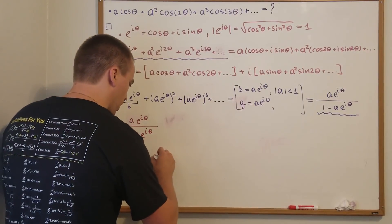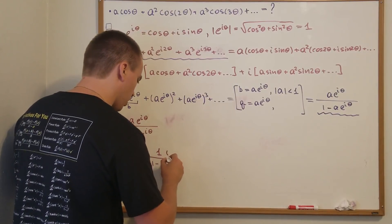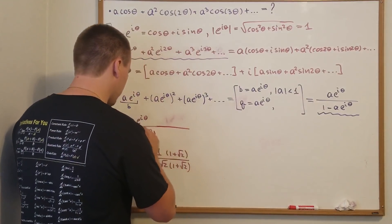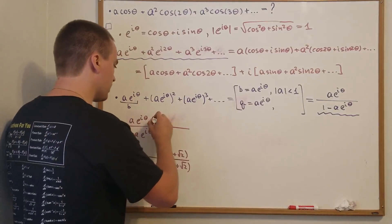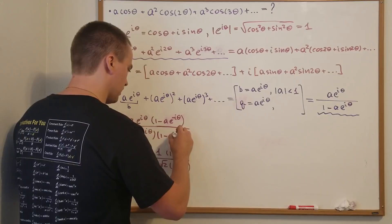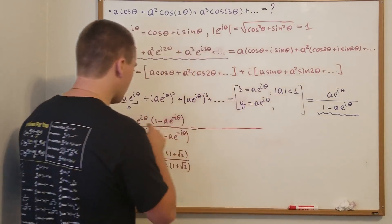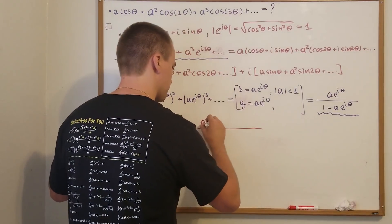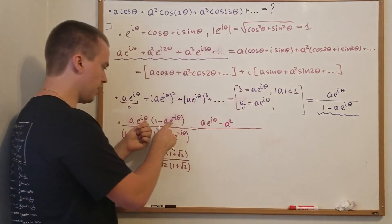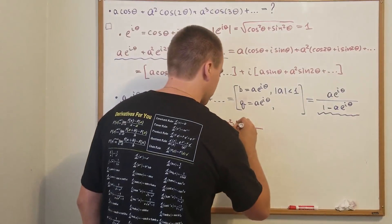Just as with 1 over (1 − √2) we multiply top and bottom by (1 + √2) to rationalize the denominator, here we multiply both parts by the conjugate. We multiply by (1 − A·e^(−iθ)). On the top part we get A·e^(iθ) minus A²·e^(iθ − iθ), and since e^0 = 1, that second term becomes just A².